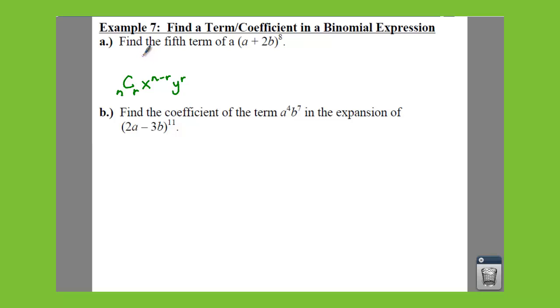If n is your 5th term, we need to say r is equal to, well, r is 1 less than the term you're trying to find. So since we're trying to find our 5th term, we have 5 minus 1, which is equal to 4.